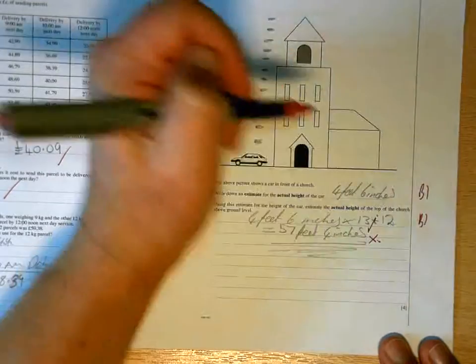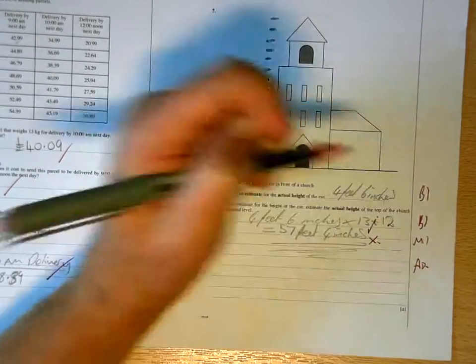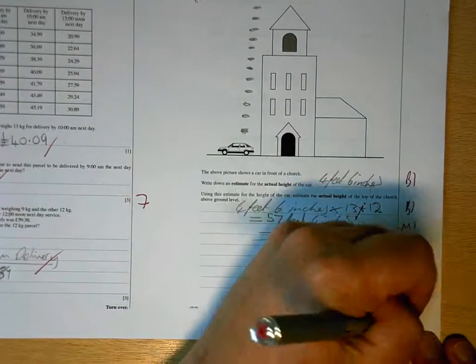So, you're going to get one mark, one mark, no marks. Seven, ten for the page.